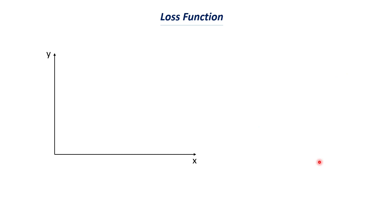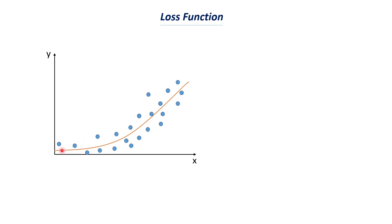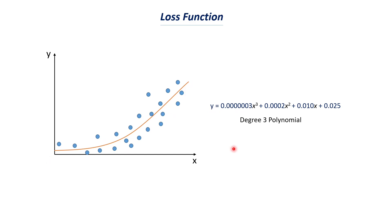Suppose we have an x-axis and a y-axis with some data plotted. We need to find a model or curve that fits this dataset. It is not possible to draw a line or curve passing through all data points, so we draw a curve that almost passes through all the points. The trend shows that as x increases, y doesn't increase much initially, but after a certain point y increases as x increases. The equation of such a curve might look like a degree-3 polynomial with terms x³, x², and x, where the values before each term are called coefficients or parameters of the model.